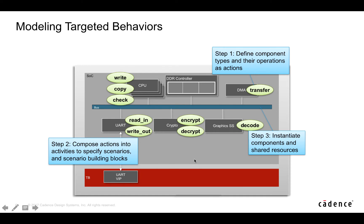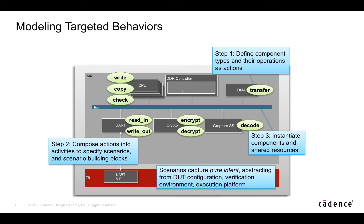You can always take these existing use cases and scenarios and change the number of CPUs, change the number of channels, maybe have other components contribute to or initialize that memory buffer instead of the CPU. All these things could be changed. What we're doing is adaptable — adaptable to system changes, spec changes, and platform changes as we move from one platform to another. The scenarios are pure intent — very adaptable, very flexible to DUT configuration environments and platform.